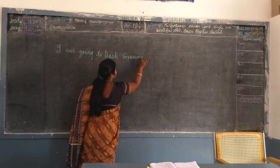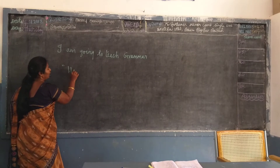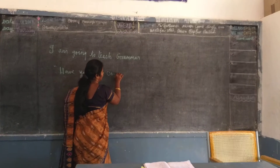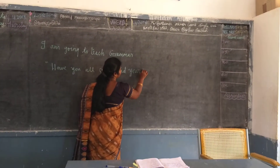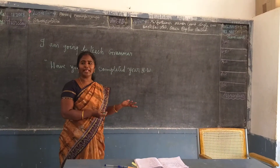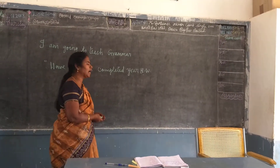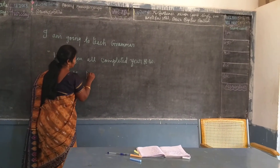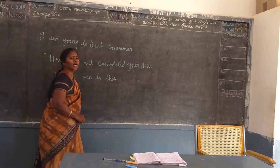Next, I asked you: have you all completed your homework? Next, Sonimuth found some pen from the ground and he wanted to ask whose pen it was, isn't it? So what he asked: whose pen is this? What did he ask you? Whose pen is this?